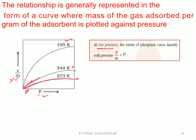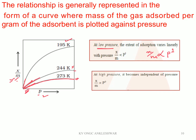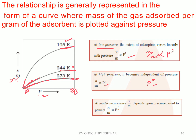At low pressure, the extent of adsorption varies linearly — all three curves appear linear at low pressure. This means x/m is directly proportional to P raised to the power 1 — so 1/n = 1. At high pressure, a saturation state is reached — x/m becomes proportional to P raised to the power 0 — meaning 1/n = 0. At intermediate pressure, x/m is proportional to P^(1/n), where 1/n lies between 0 and 1.